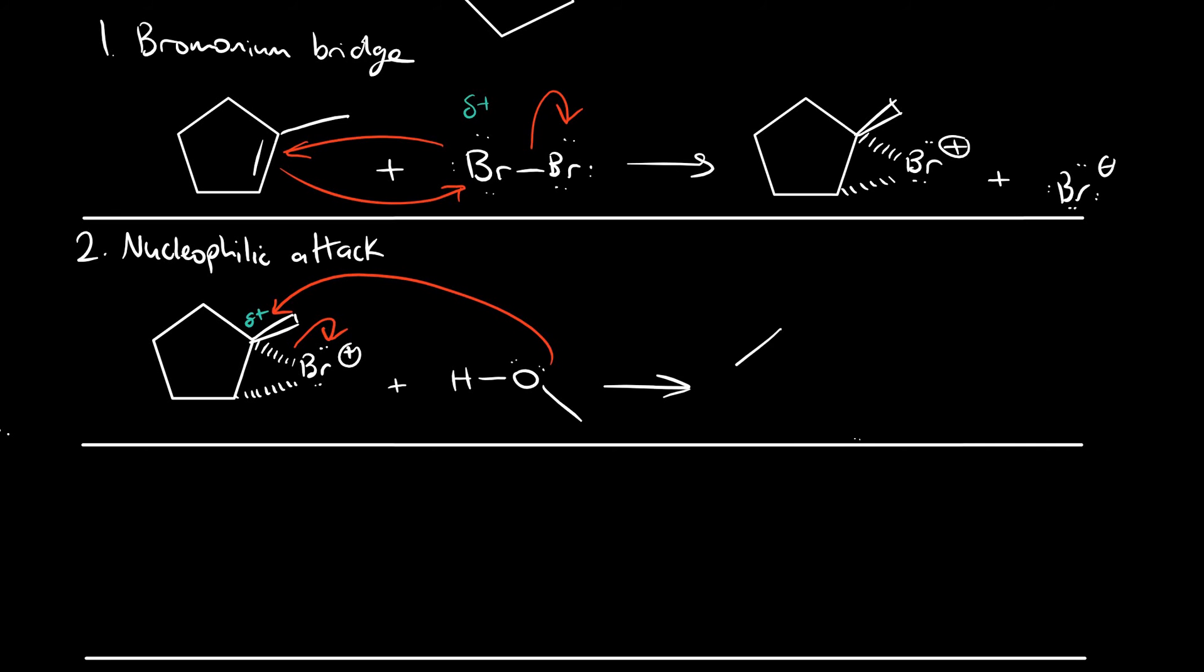The net result from step two is that we end up with a bromide here on a dash and the nucleophile establishing out front, forcing the methyl into the back.